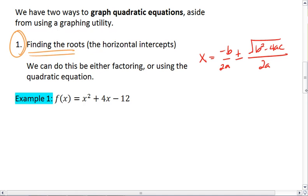Okay, let's look at our first example. Go ahead, take a moment. Factor f of x equals x squared plus 4x minus 12.